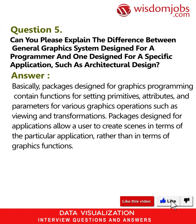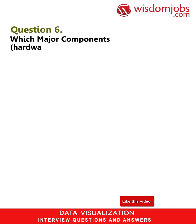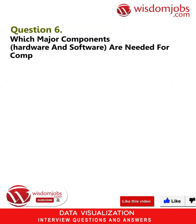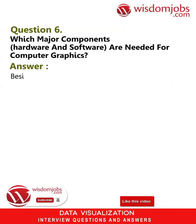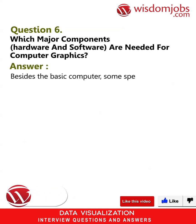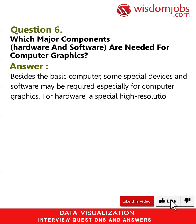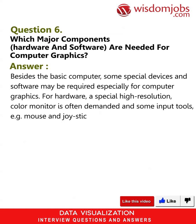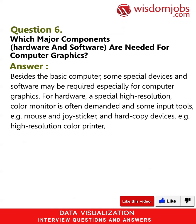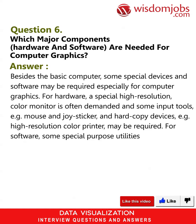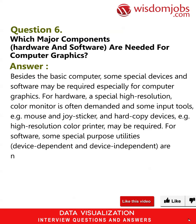Question 6: Which major hardware and software components are needed for computer graphics? Answer: Besides the basic computer, special devices and software may be required. For hardware, a special high-resolution color monitor is often needed, along with input tools such as a mouse and joystick, and hard copy devices such as a high-resolution color printer. For software, special purpose utilities — both device-dependent and device-independent — are needed for handling and processing in computer graphics.